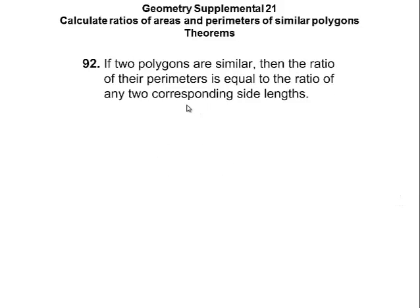If two polygons are similar, then the ratio of their perimeters is equal to the ratio of the side lengths. That should make sense, because the perimeter is just adding up the sides. So if I'm adding up the sides of one polygon and the sides of the other, their ratio should stay the same. If the side ratio is X over Y, then the perimeter ratio is also X over Y.